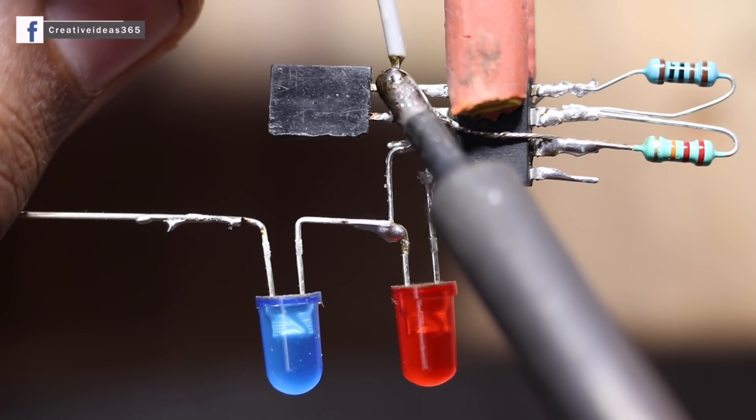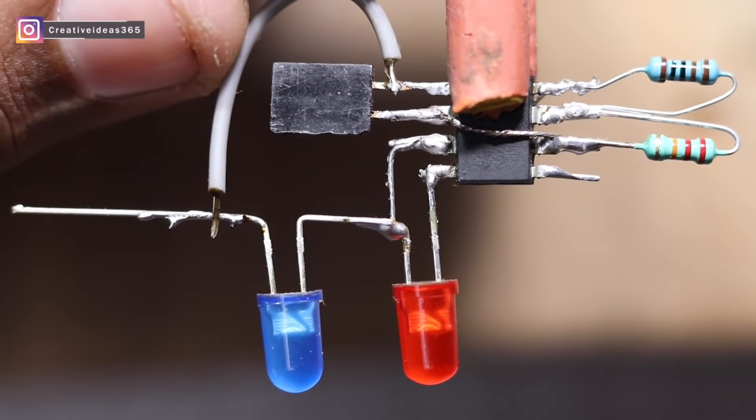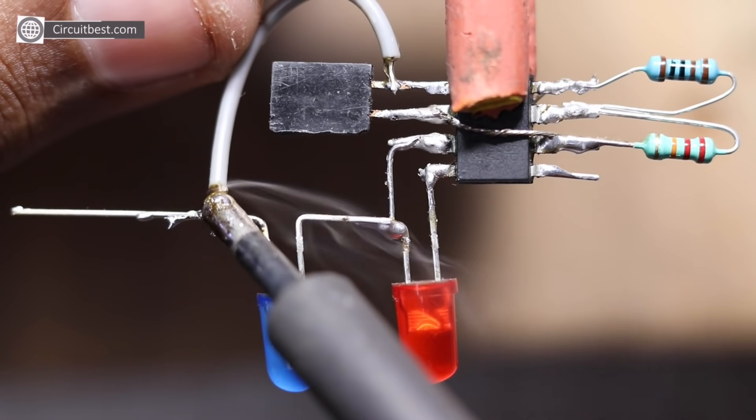Now connect the blue LED negative. Connect IC pin 5 with IC pin 1, which is also ground.